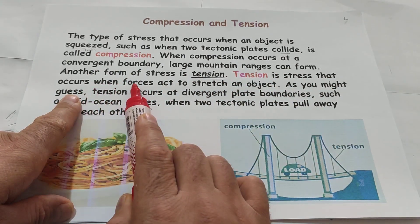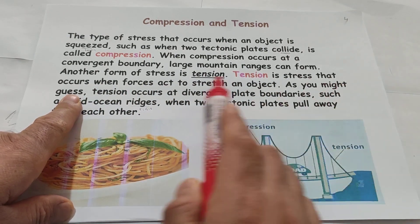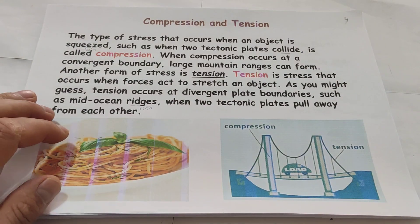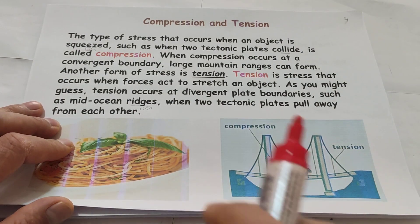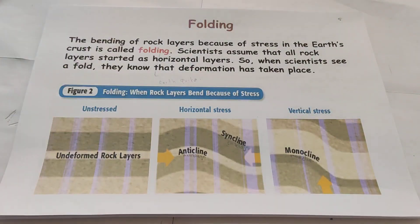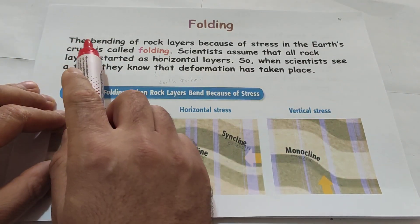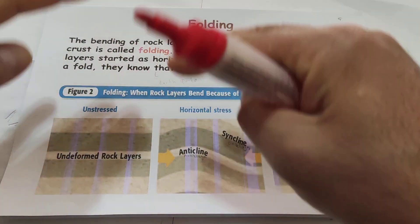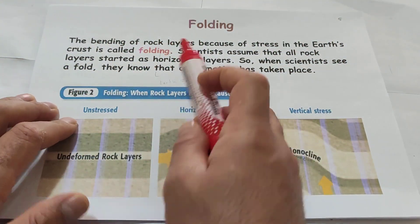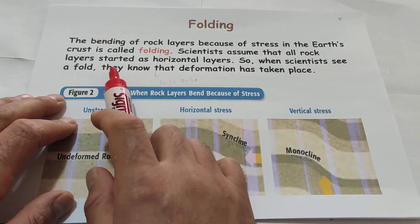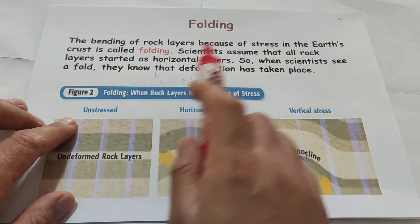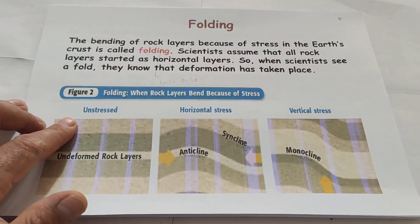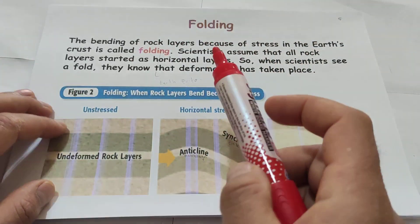Another form of stress is tension. Tension is stress that occurs when forces act to stretch an object. As you may have guessed, tension occurs at divergent plate boundaries, such as mid-ocean ridges, when two tectonic plates pull away from each other. The bending of rock layers because of stress in the earth's crust is called folding. Sometimes the earth's crust bends, and that bending we call folding. Scientists assume that all rock layers start as horizontal layers, so when scientists see a fold, they know that deformation has taken place.